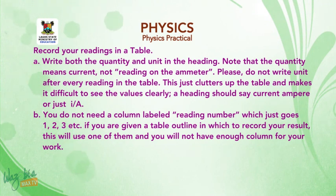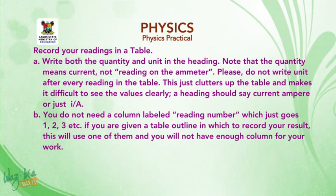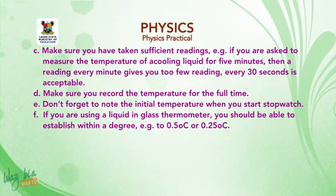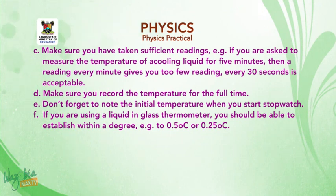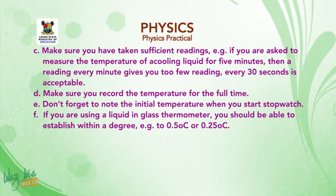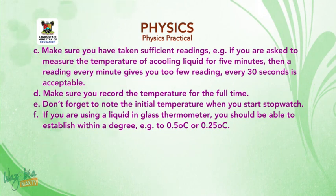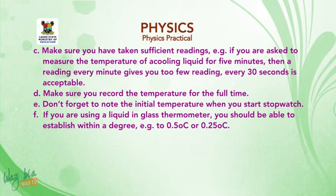A heading should say 'current / ampere' or just 'I / A'. You do not need a column labelled 'reading number' which just goes 1, 2, 3, etc. — if you are given a table outline to record your results, this will use up a column and you will not have enough columns for your work. Make sure you have taken sufficient readings. For example, if you are asked to measure the temperature of a cooling liquid for 5 minutes, a reading every minute gives too few readings; every 30 seconds is acceptable. Make sure you record the temperature for the full time, and don't forget to note the initial temperature when you start the stopwatch. If you are using a liquid-in-glass thermometer, you should be able to estimate within a degree, e.g. to 0.5°C or 0.25°C.